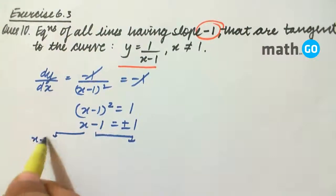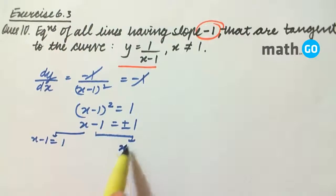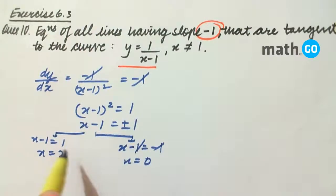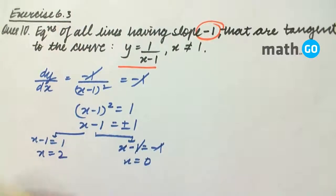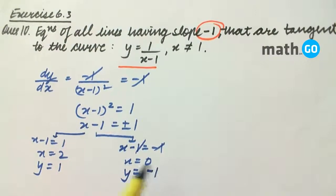x-1 = 1 and x-1 = -1. This gives x = 2 and x = 0. Correspondingly, for x = 2 the value of y is 1, and for x = 0 the value of y is -1.